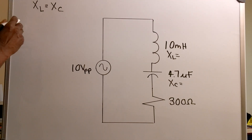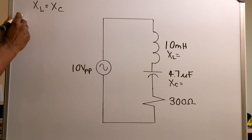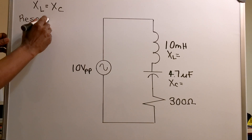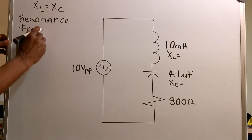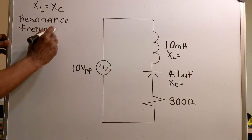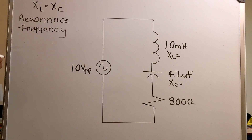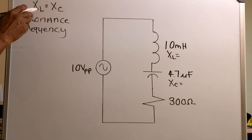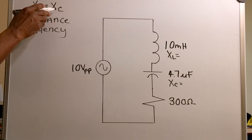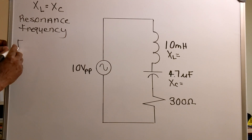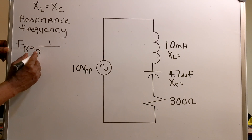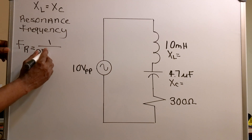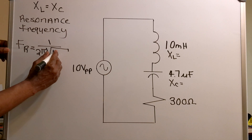That frequency is called the resonance frequency. The resonance frequency is the frequency at which the reactance of the inductor and the reactance of the capacitor are equal. The formula is: frequency equals 1 over 2 pi times the square root of inductance times capacitance.